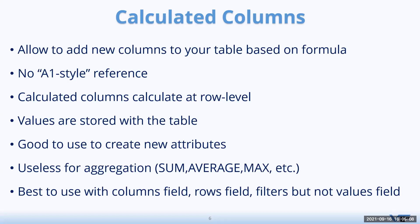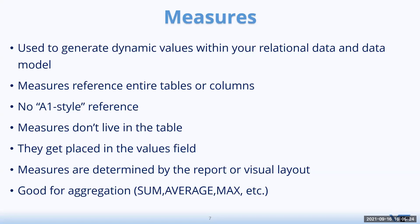When calculated columns are created and used in a pivot table, the values appear in row fields, filter fields, or column fields — not in the value fields. A measure is a placeholder for a value. For example, you can create a measure called 'Total Expenses' or 'Total Sales'. The measure does not live inside the table; you call it to come inside your table. It's good to use with aggregation functions like sum, average, max, and so on.